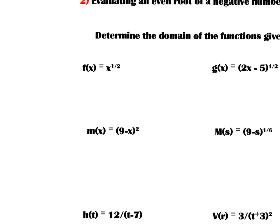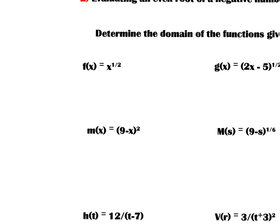Let's determine the domain of the functions given. Starting with f(x) = x to the one-half power, which is equivalent to the square root of x. We have an even root, so we want the expression inside — the radicand — to be greater than or equal to zero. I can take the square root of zero or any positive number, therefore x must be greater than or equal to zero. That's the domain of f(x).